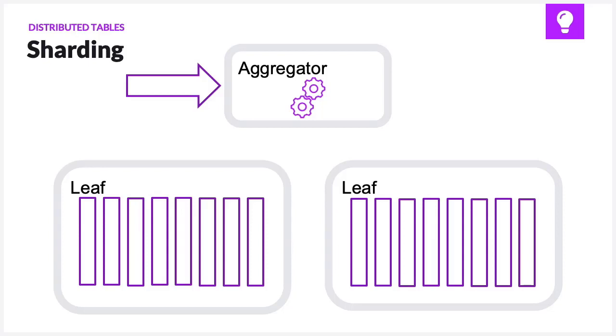SingleStore is a distributed database where data is spread out to partitions on leaf nodes. All of the partitions hold some of the data for your database. In this small sample cluster with an aggregator and two leaves we have 16 partitions, 8 on each leaf.